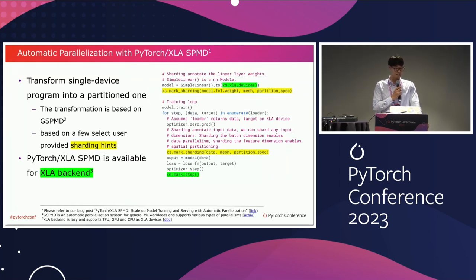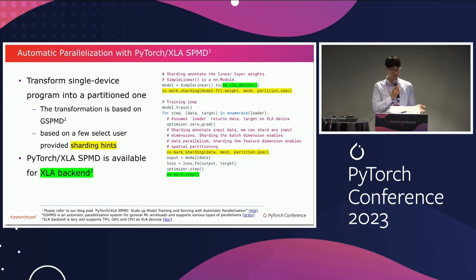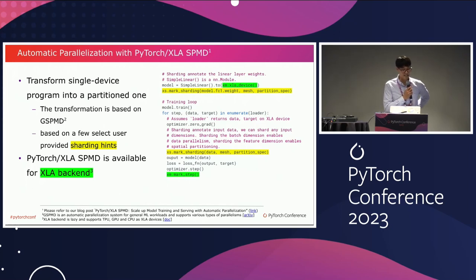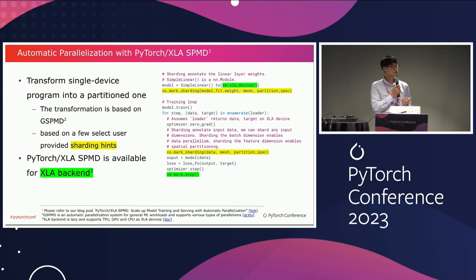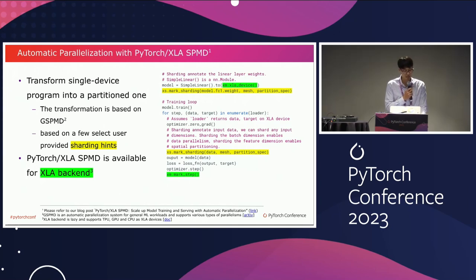What is PyTorchXLA SPMD? PyTorchXLA SPMD is a new API that we are releasing as experimental in the PyTorchXLA 2.1 release. It is a new feature that brings GSPMD into PyTorch. For those who are not so familiar with GSPMD, it is an automatic parallelization system that transforms a single device program into a partitioned one. The actual transformation is transparent to the user, meaning the user doesn't need to call explicit collectives and doesn't require any special sharding operations or special torch ops implemented for sharded tensors.